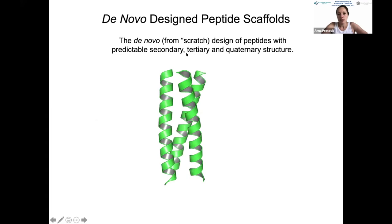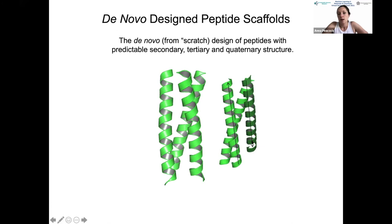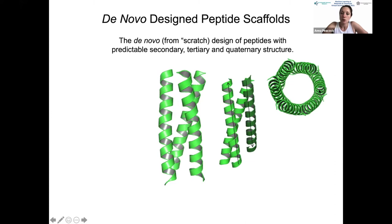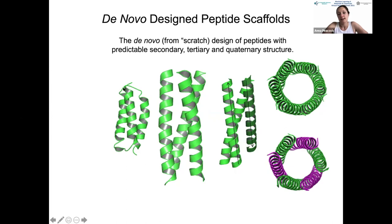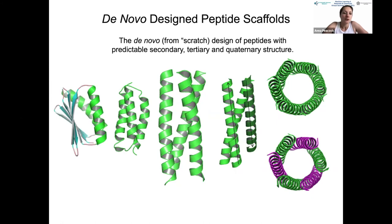Here's a coiled coil: a parallel three-stranded homotrimer where a designed peptide sequence forms an alpha helix and three of these come together in parallel, supercoiling around one another. You can design anti-parallel helices, two-stranded coiled coils, or six-stranded coiled coils as developed by Dek Woolfson's group. Hetero-assemblies are possible using two different peptides. We can also make helical bundles—helices connected by loops—or structures mixing both alpha helices and beta sheets.